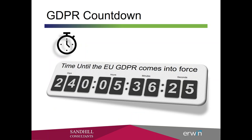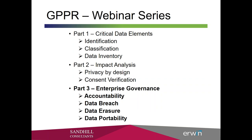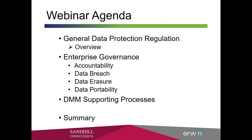Thank you, Robert. As you can see by the countdown clock, we have 240 days, 5 hours, and 36 minutes until GDPR comes into force — approximately eight months. This is part three of a three-part series. Part one covered critical data elements: identification and classification of personally identifiable and sensitive information. Part two looked at processes including privacy by design and consent verification. This third part covers enterprise governance: accountability for private and sensitive data, data breaches, data erasure, data portability, and the data maturity model from the CMMI Institute.